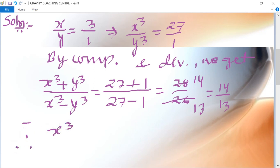Therefore, (x³ - y³)/(x³ + y³) = 13/14, so the ratio is 13:14.